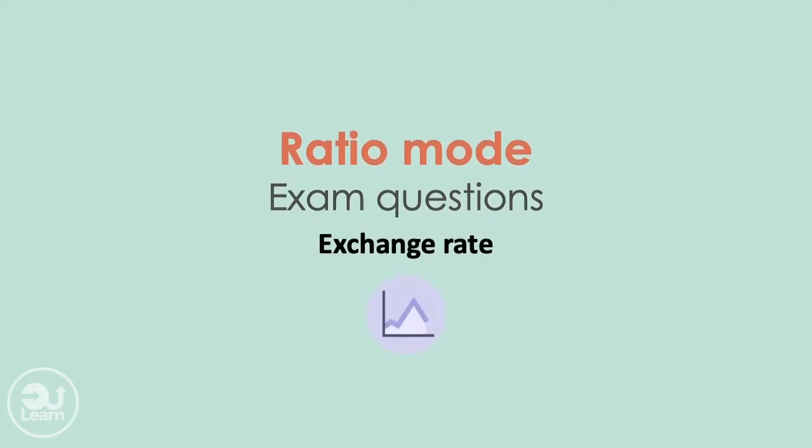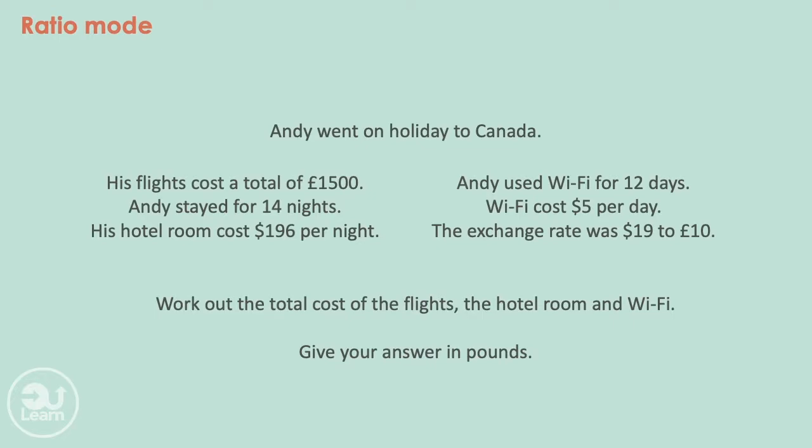Let's start with an exchange rate question. Andy went on holiday to Canada. His flights cost a total of £1,500. Andy stayed for 14 nights. His hotel room cost $196 per night. Andy used Wi-Fi for 12 days. Wi-Fi cost $5 per day. The exchange rate was $19 to £10. Work out the total cost of the flights, the hotel room and Wi-Fi. Give your answer in pounds.